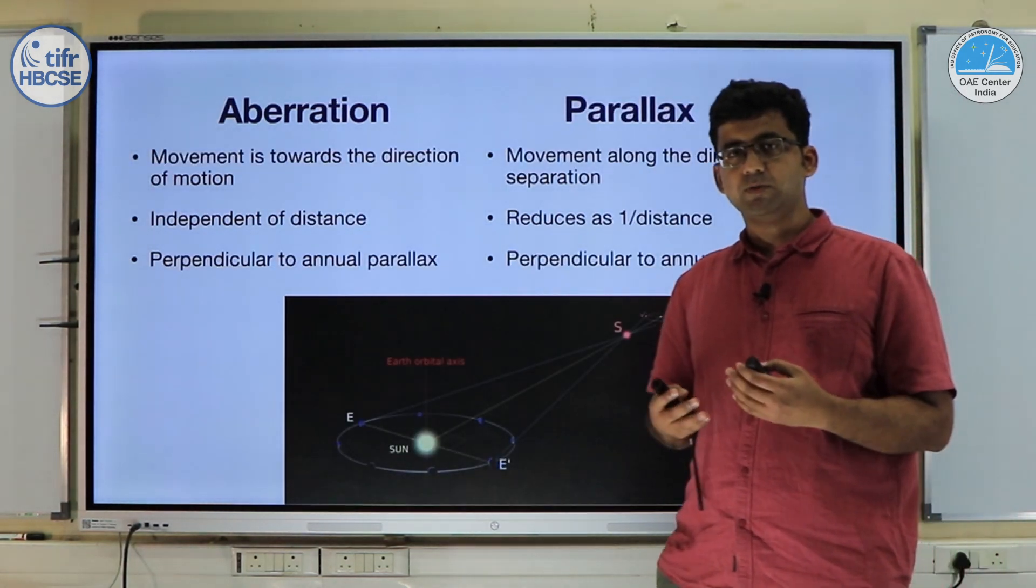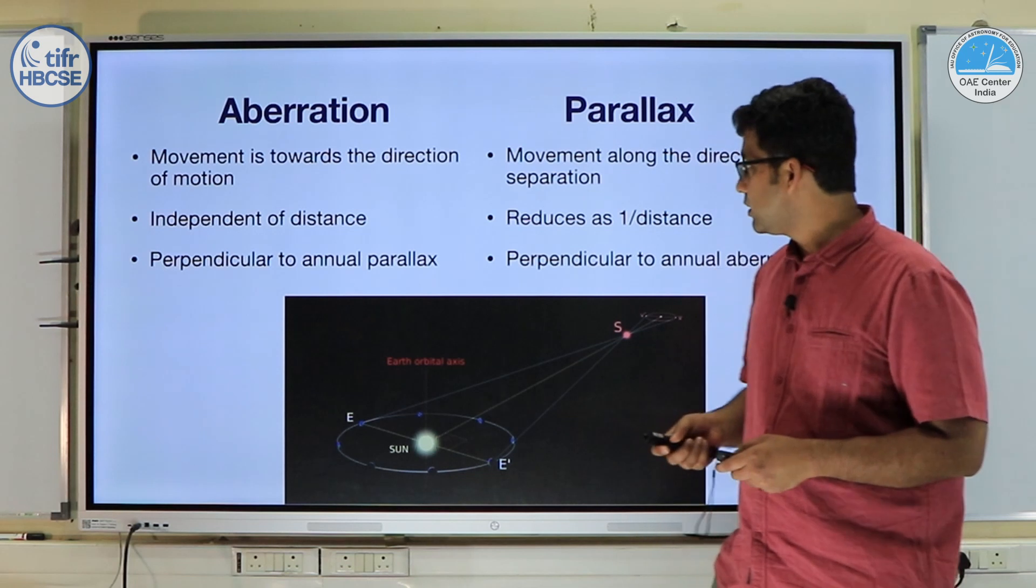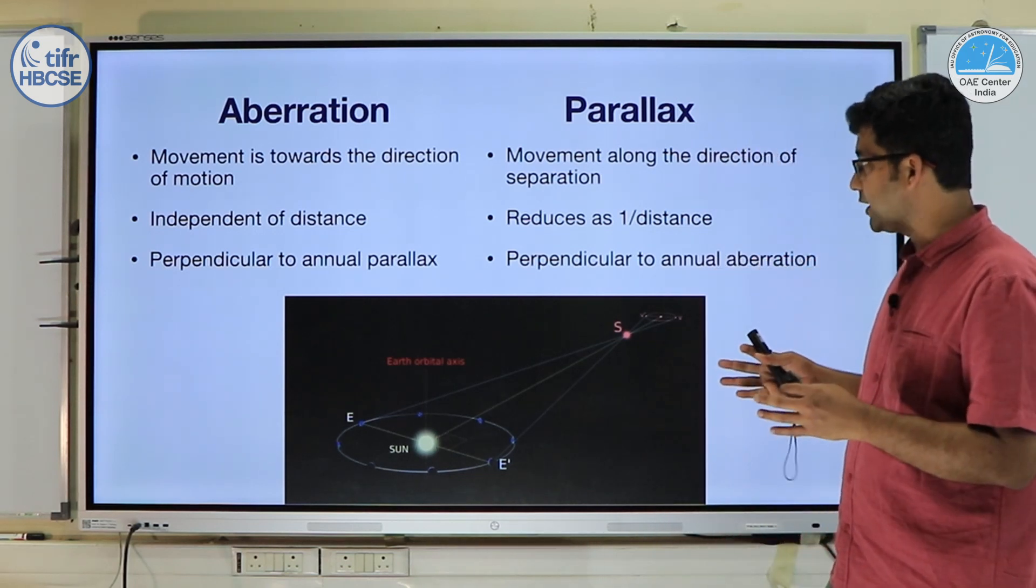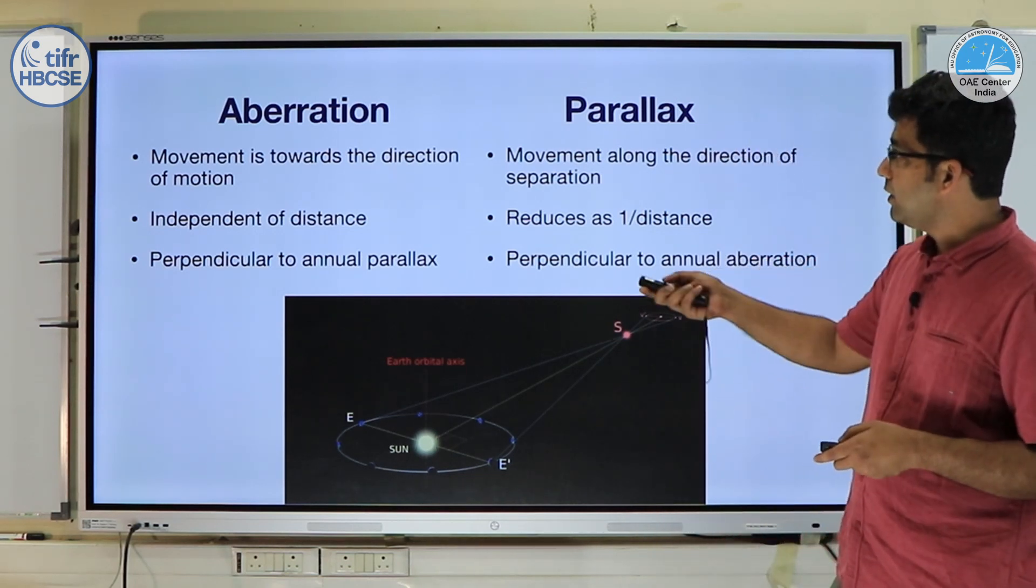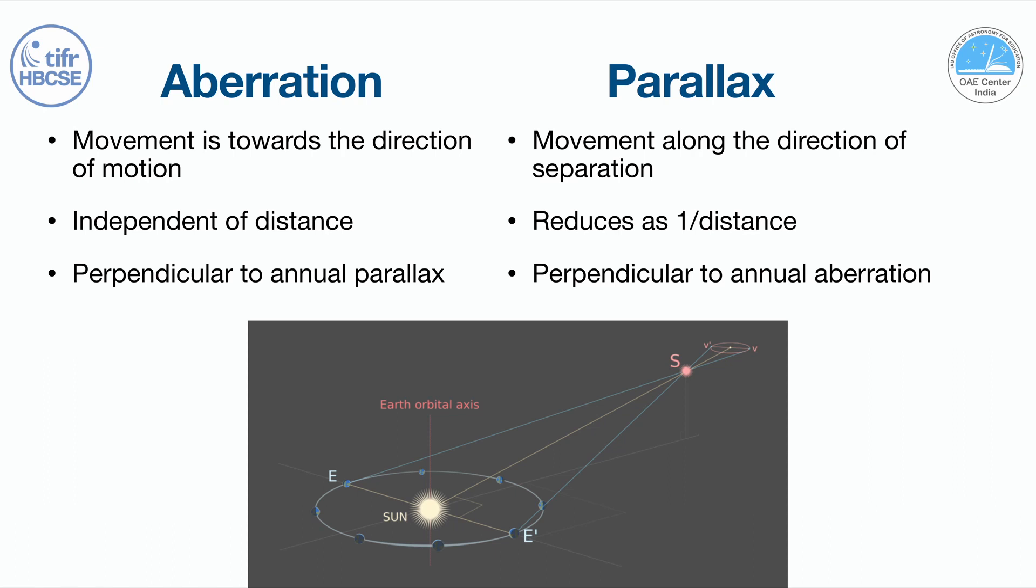Now you may ask what is the difference between aberration and parallax? There are two important effects but they are both quite independent. Aberration is the movement towards the direction of motion. Parallax is the movement along the direction of the separation between two observations.